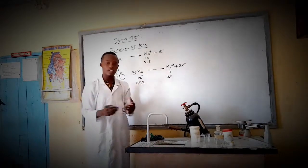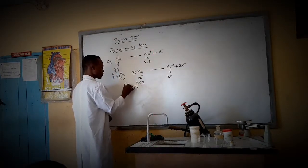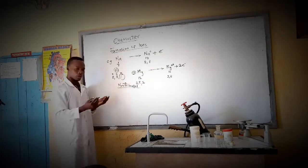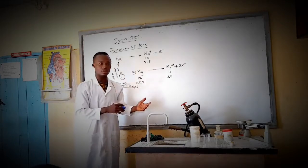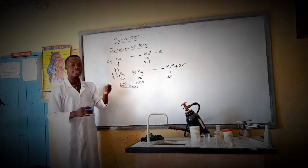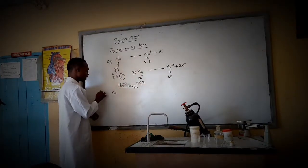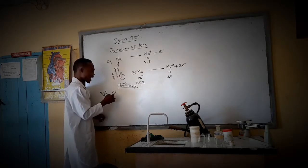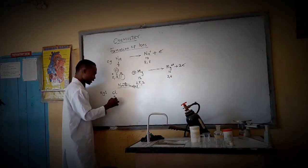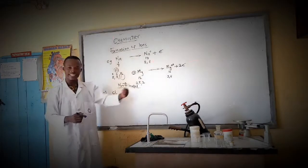Now, what about non-metals? For example, chlorine is a non-metal — it is a gas. Chlorine has 17 electrons, giving a configuration of 2, 8, 7. It has 7 electrons in the outermost shell and only needs 1 more to be complete. It won't give away 7; instead, it takes in 1 electron.